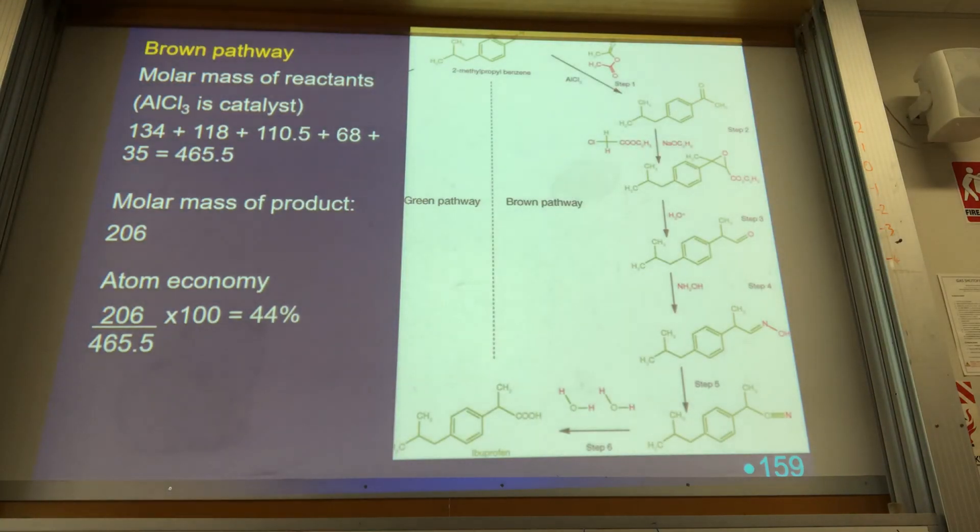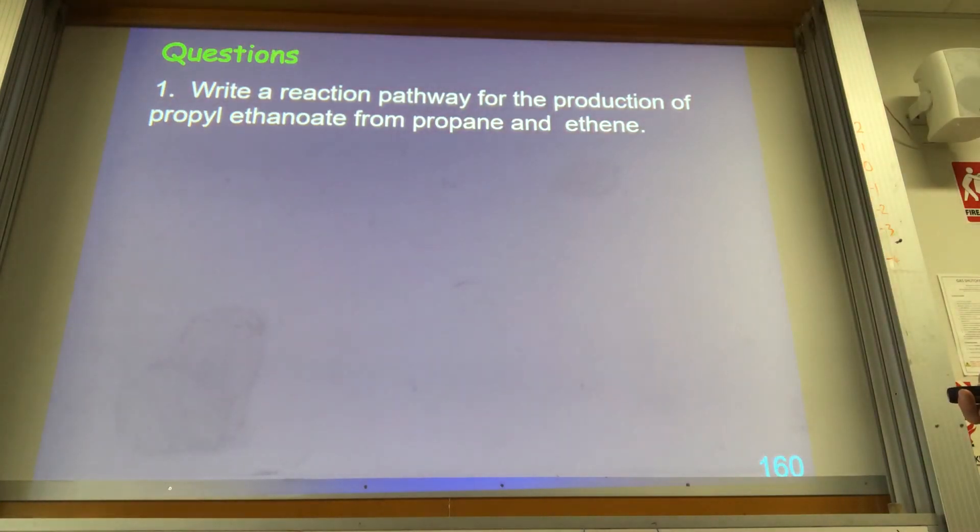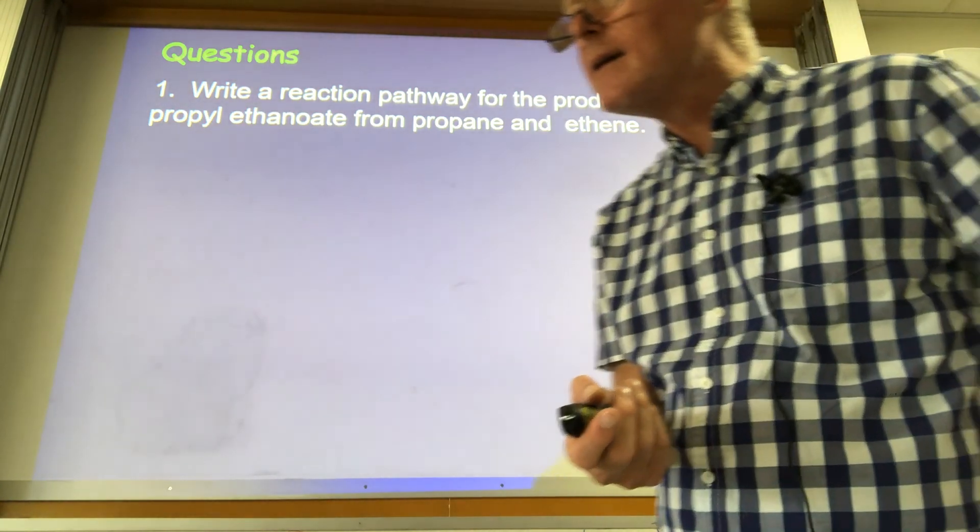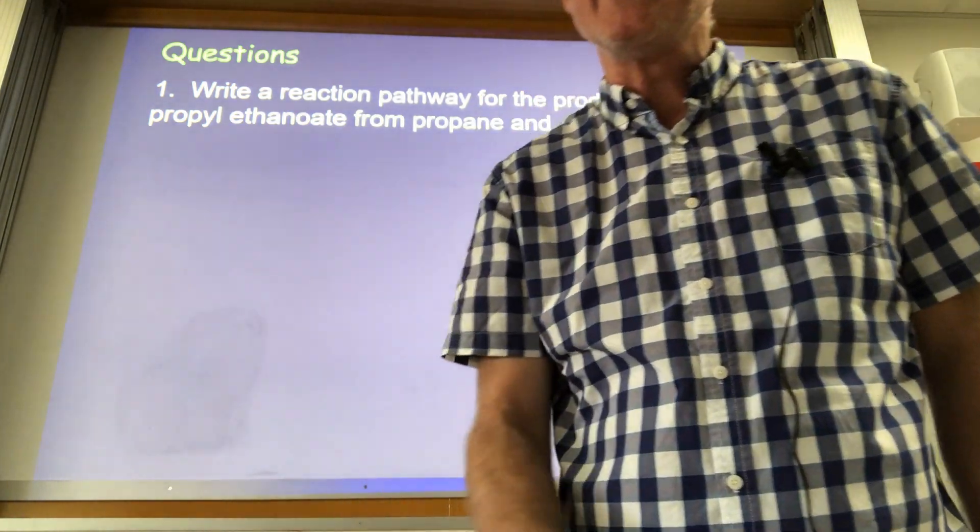The brown pathway, we've got lots more bits being wasted along the way. So all those reactants go together, total mass of all the reactants is that, total mass of the desired product is the same. That gives us an atom economy of 44 percent. So it's another way of measuring the efficiency of a more complicated pathway. Okay, have a go at the questions, and that is the end of organic pathways.